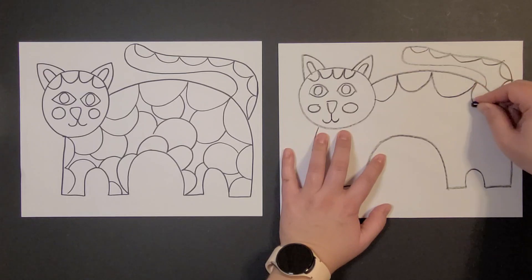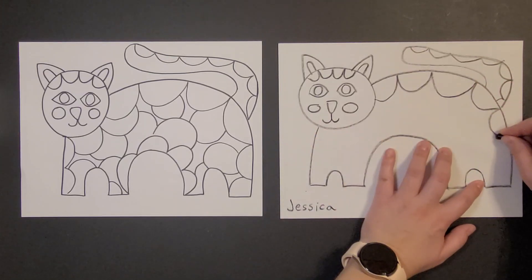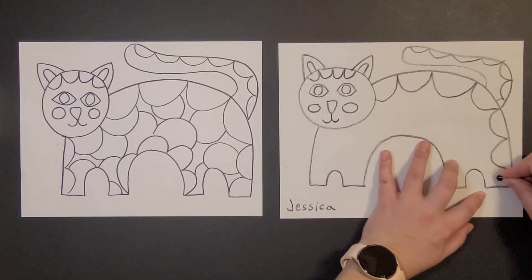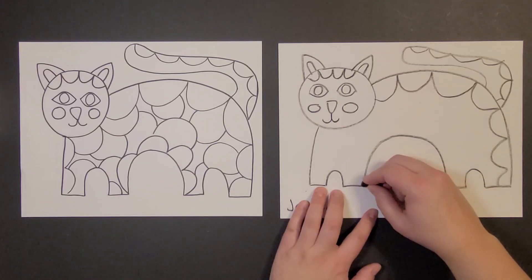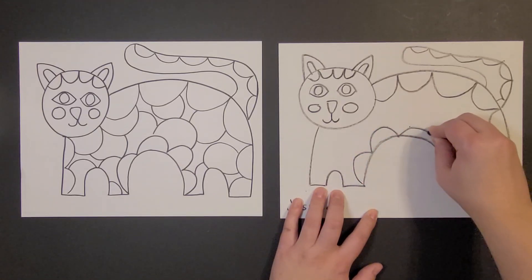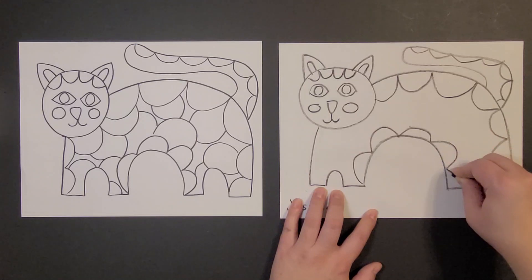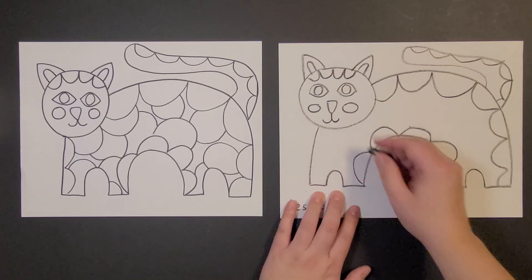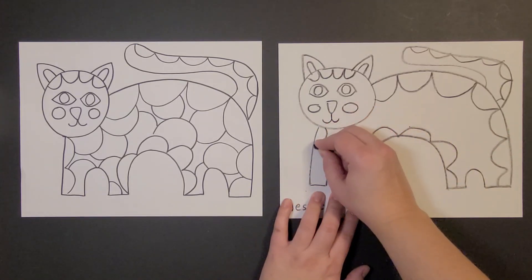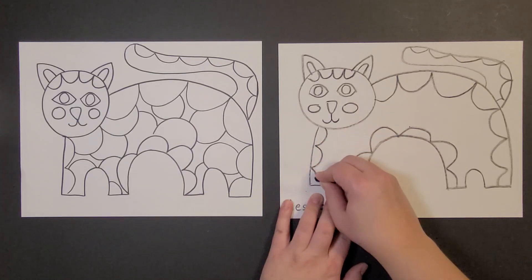And then I can start putting all of these lines in on my kitty. I'm gonna start by doing these big U's right there. And I'll do those big U's right here. I think U is this kitty's favorite letter.